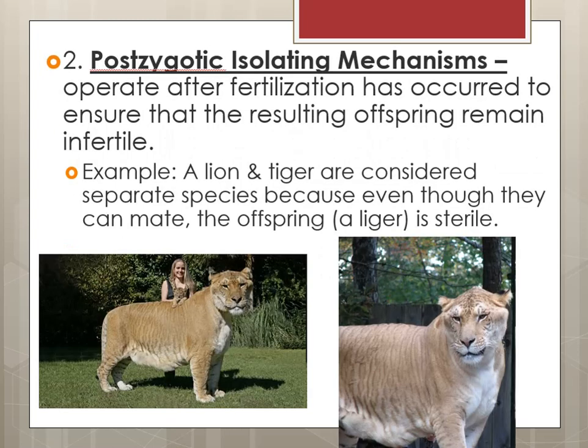The other one is called a postzygotic isolating mechanism. This operates after fertilization has occurred to ensure that the resulting offspring remains infertile. A lion and a tiger are considered separate species because even though they can mate, the offspring — which is a liger or a tigon depending on which is the male or the female — is entirely sterile. This situation would never happen in the wild; this is an entirely human-created situation. All of the organisms produced out of this are sterile and cannot reproduce on their own.